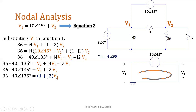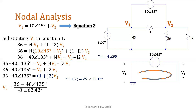Factoring out V2, we get (1 + j2) which equals √5∠63.43°. It's better not to round off when using your calculator — use the store function if you want. So V2 = (36 − 40∠135°) divided by (1 + j2), or √5∠63.43°. Therefore, V2 = 31.41∠−87.18°.